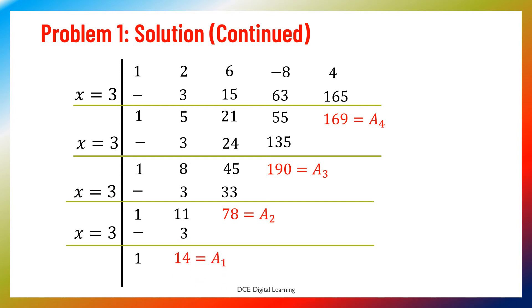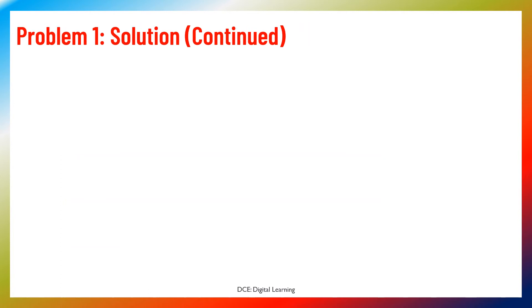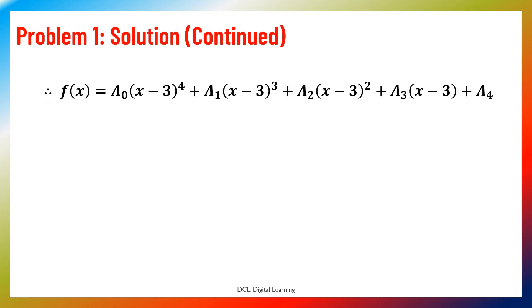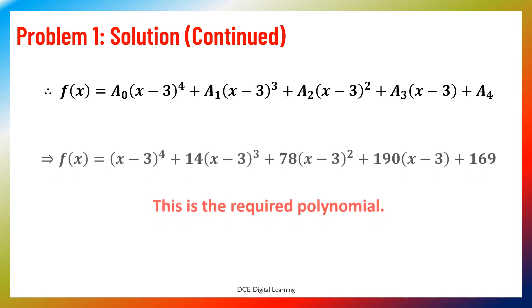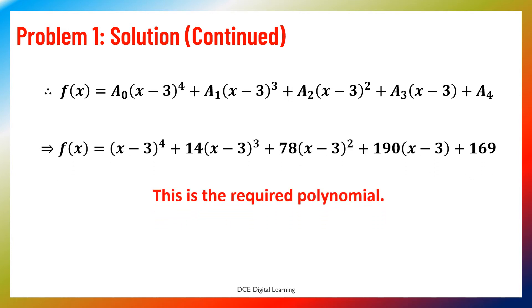Continuing the synthetic division, we find a₂ equals 78 and a₁ equals 14. Finally, dividing again by (x−3) gives the leading coefficient a₀ equals 1. Therefore f(x) equals (x−3)⁴ + 14(x−3)³ + 78(x−3)² + 190(x−3) + 169. This is the required polynomial.